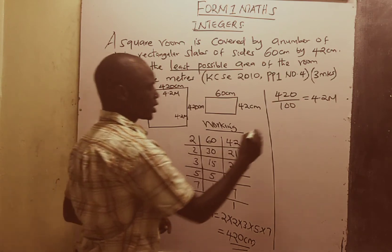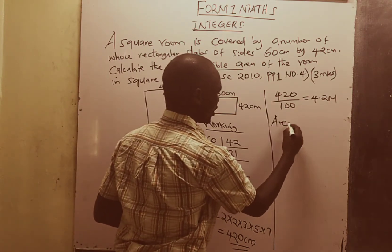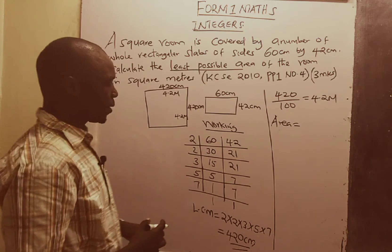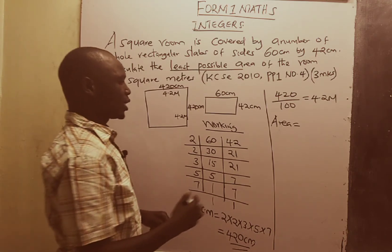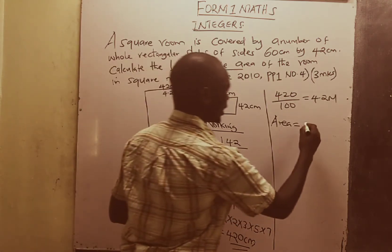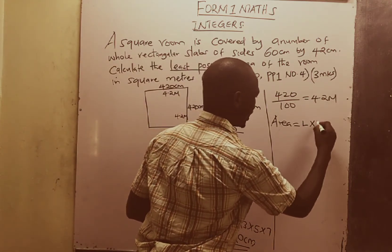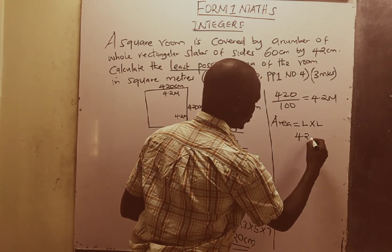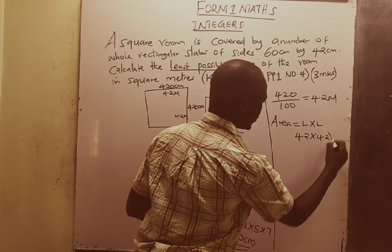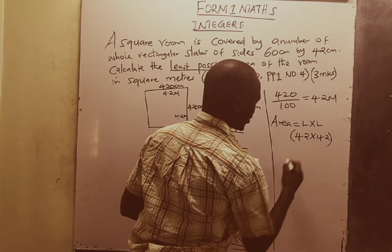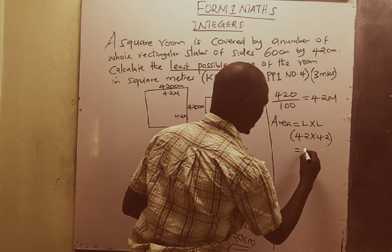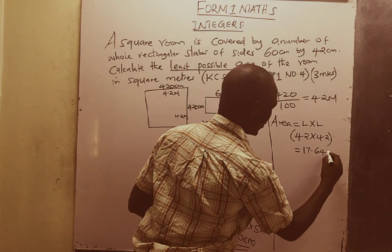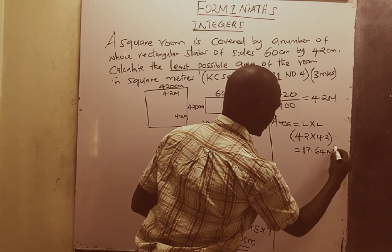Now we can calculate the area. The area of a square is given by side times side, or simply length times length. This gives us 4.2 times 4.2, and this gives us 17.64 square meters.